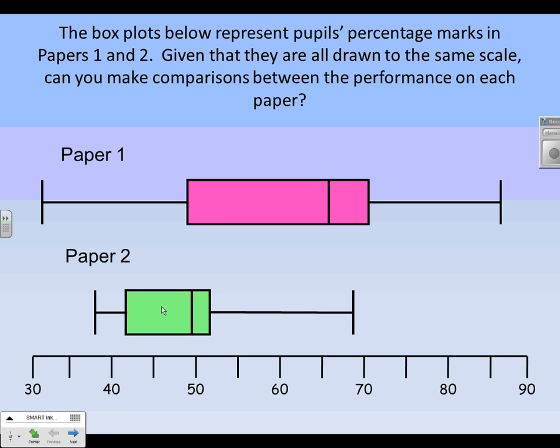Looking at it from another way, the interquartile range in paper one is bigger. Therefore, the marks in paper one are more varied. So it's having your standard averages comment and your standard spread comment.